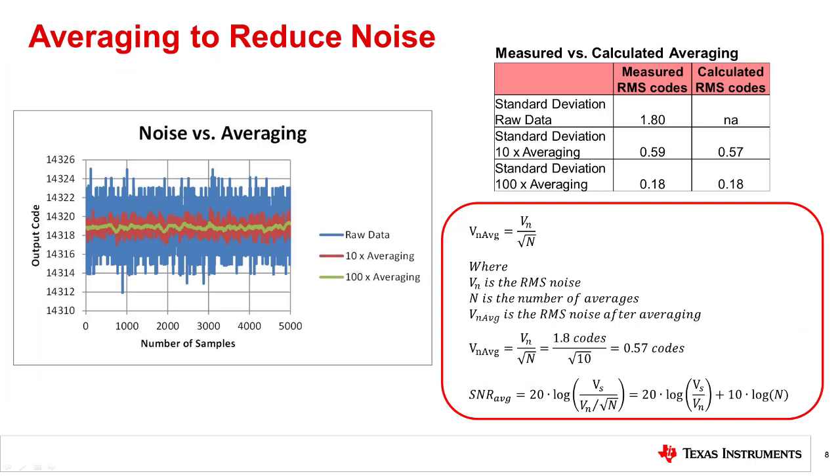One way to reduce noise is to optimize the signal chain by choosing low noise amplifiers and carefully selecting components to minimize noise. However, once the signal chain is optimized, you may want to further reduce the noise. Averaging is another approach for reducing total noise. This example shows real-world measured noise from the previous example. For a random uncorrelated Gaussian noise distribution, the total noise after averaging is the noise before averaging divided by the square root of the number of averages. The example calculation here shows the effect of averaging by a factor of 10 on the previous example.